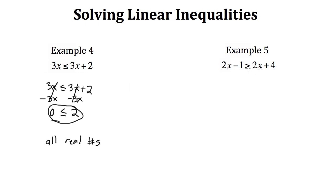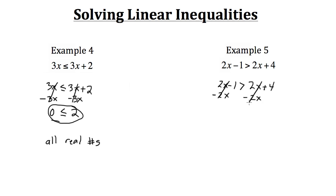In example 5 we have 2x minus 1 is greater than 2x plus 4. Again when we try to isolate x, subtracting 2x from both sides cancels them out, leaving us with negative 1 is greater than 4.